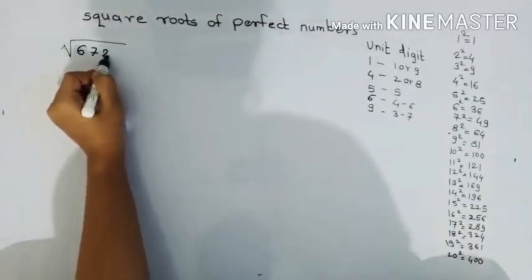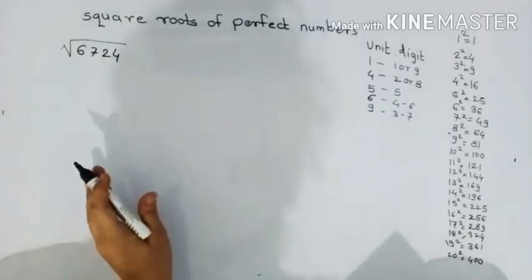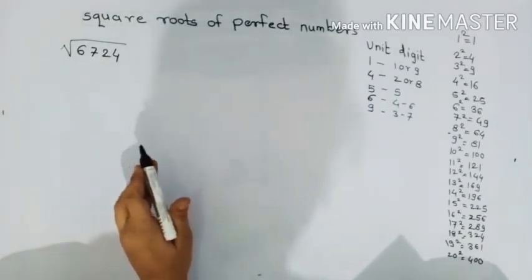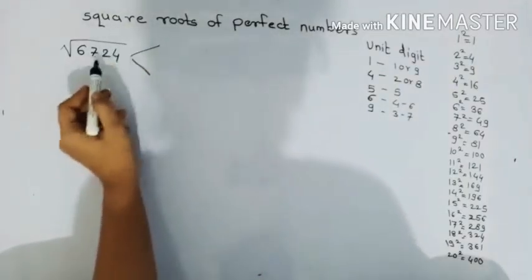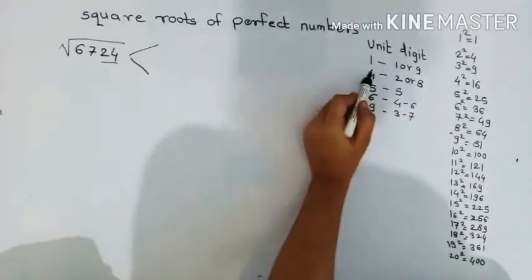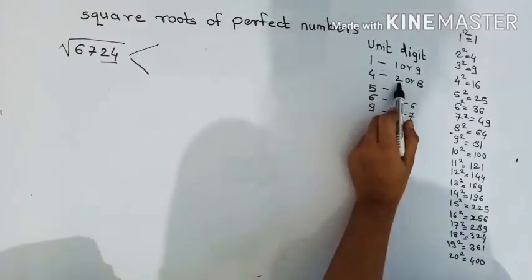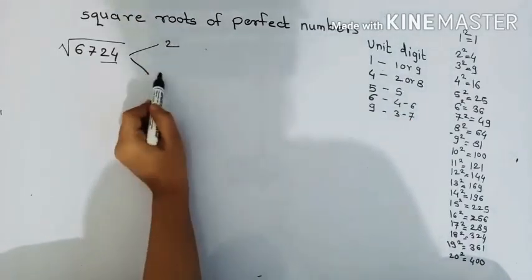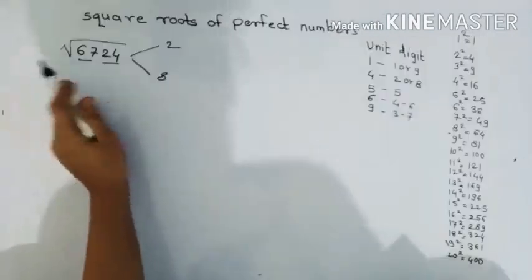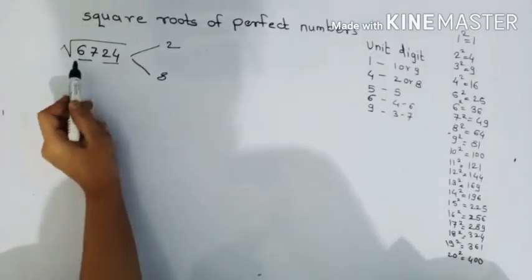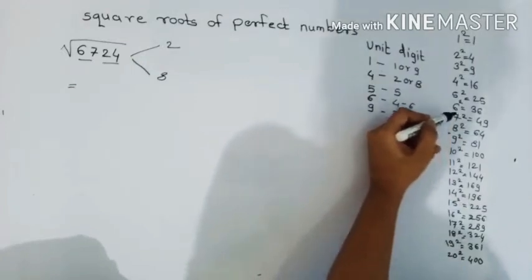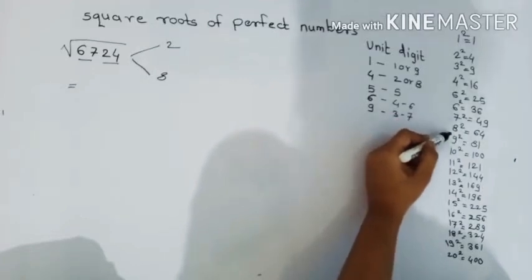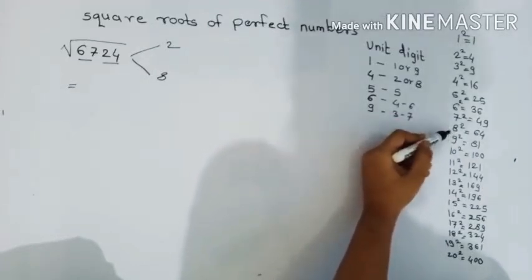For the first example, we will see 6724. This big number, the perfect number of square root is so easy. It will be the last digit in the small class. So for this, this is our last digit which is 4, so the answer is 2 possibilities, either the last digit is 2 or 8. So 2 or 8. We divide them into two parts.